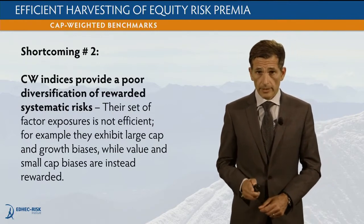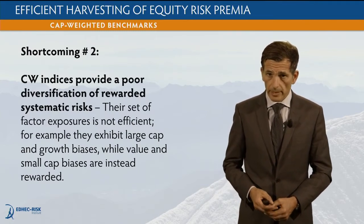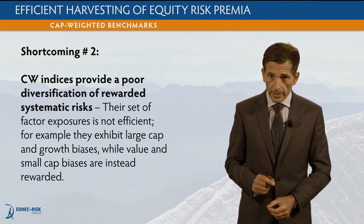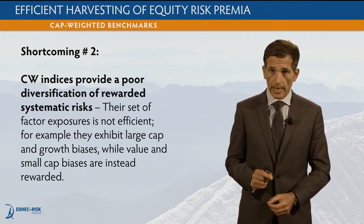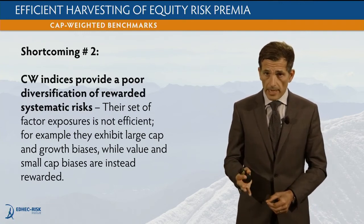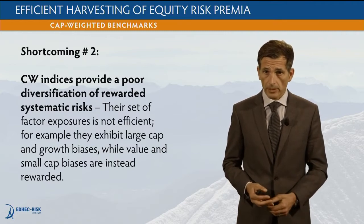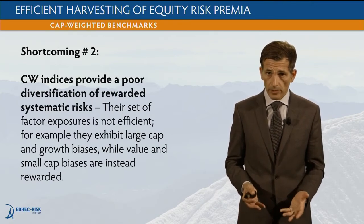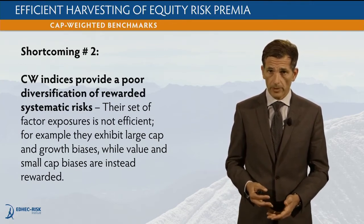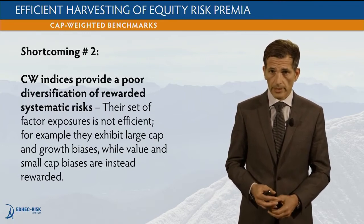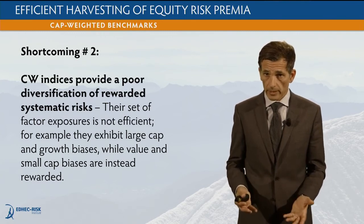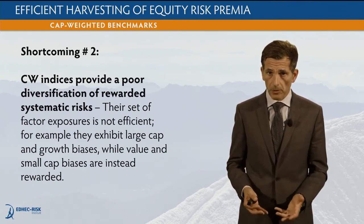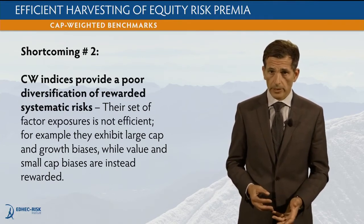There is another problem, which is an independent problem. Cap-weighted benchmarks also provide poor diversification of rewarded systematic risks. The set of factor exposures is actually highly inefficient. Think about the most commonly used factors in equity markets — namely, the Fama-French value and size factors. This refers to the well-known empirical finding that value stocks tend to outperform growth stocks, and that smaller cap stocks tend to outperform larger cap stocks. We understand this is presumably because value and size are proxies for underlying risk factors — value stocks and small cap stocks tend to be riskier than growth stocks and large cap stocks, respectively.